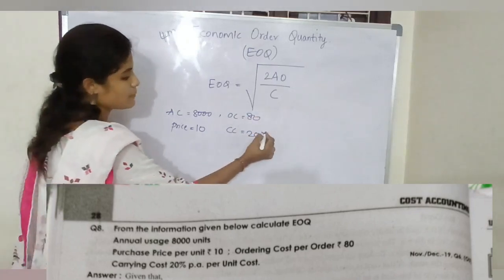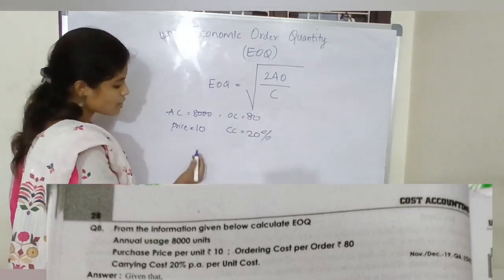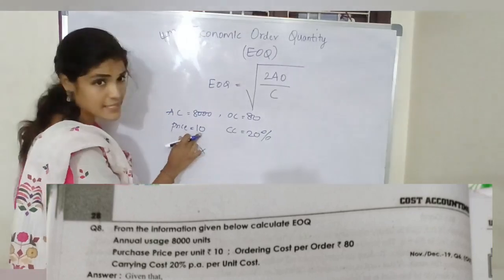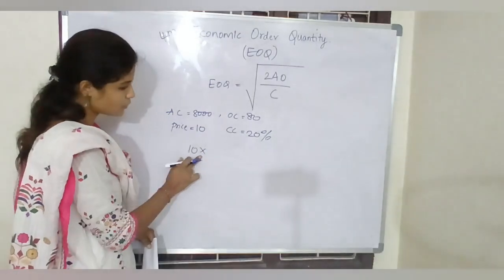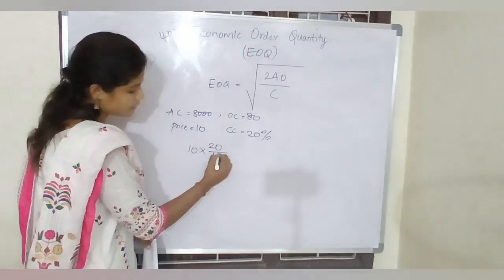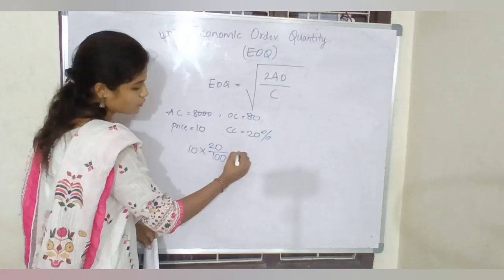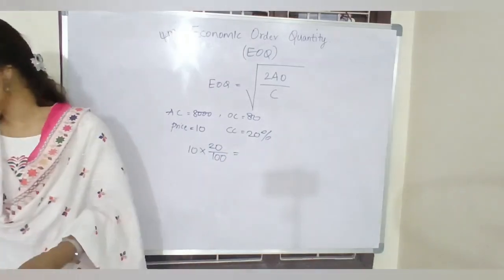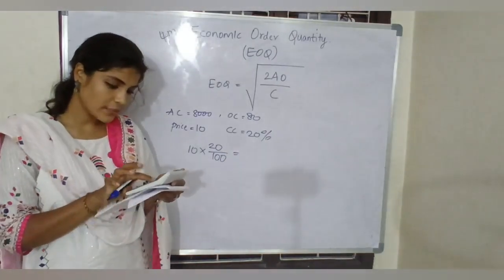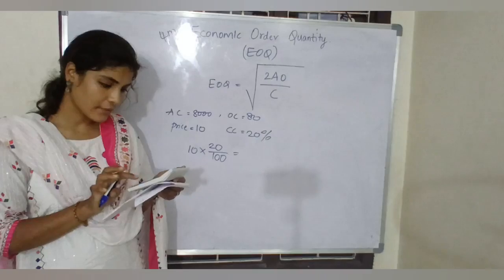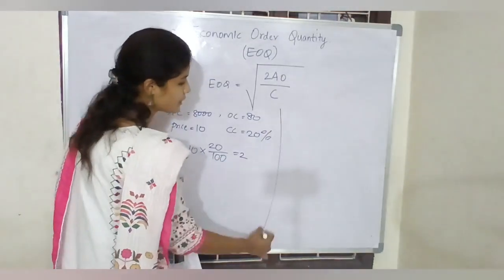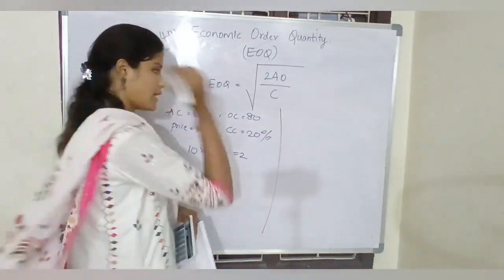First, 20 percent carrying cost needs to be calculated. Price is 10, so we do 10 into 20 divided by 100, which gives us 2. So the carrying cost is 2. Now simply convert everything into the formula.